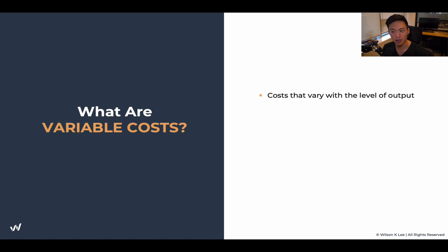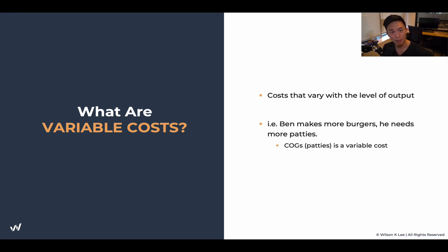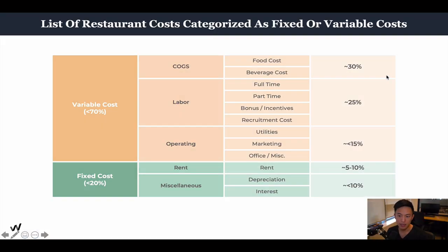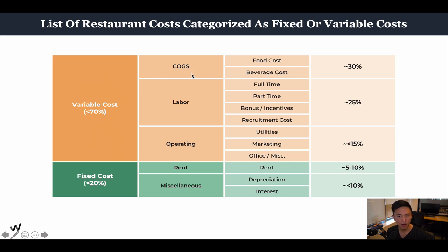What are variable costs? These are costs that vary with the level of output. Back to Ben's Burger: Ben makes more burgers, so now he needs more patties — he's going to spend more money on patties. Cost of goods sold, COGS, is a variable cost because the more he makes, the more he needs. Within variable costs, we have broken it down into more categories: cost of goods sold, which is your food cost, labor, and operating costs.